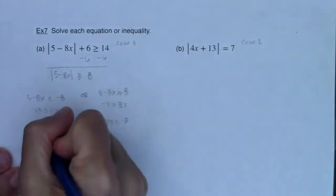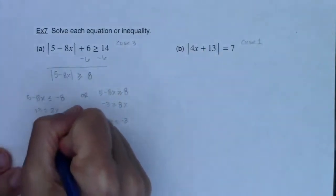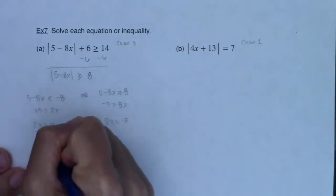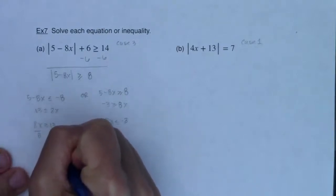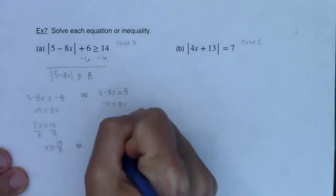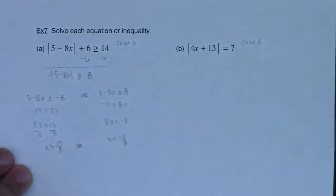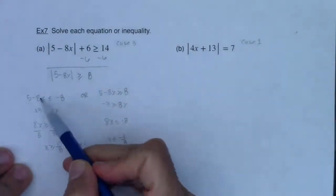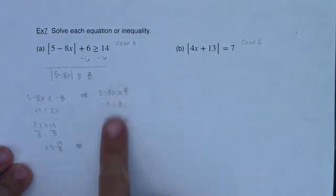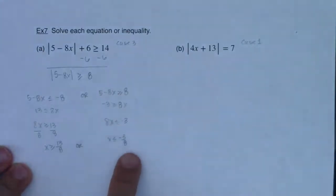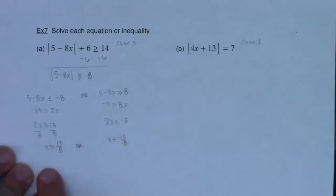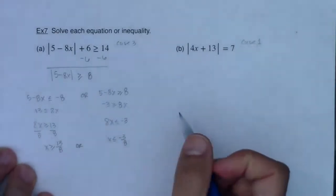Dividing by 8, I get x is greater than or equal to 13/8, or x is less than or equal to negative 3/8. Because I had a negative 8x, this side gives the smaller number — and indeed negative 3/8 is smaller than positive 13/8.